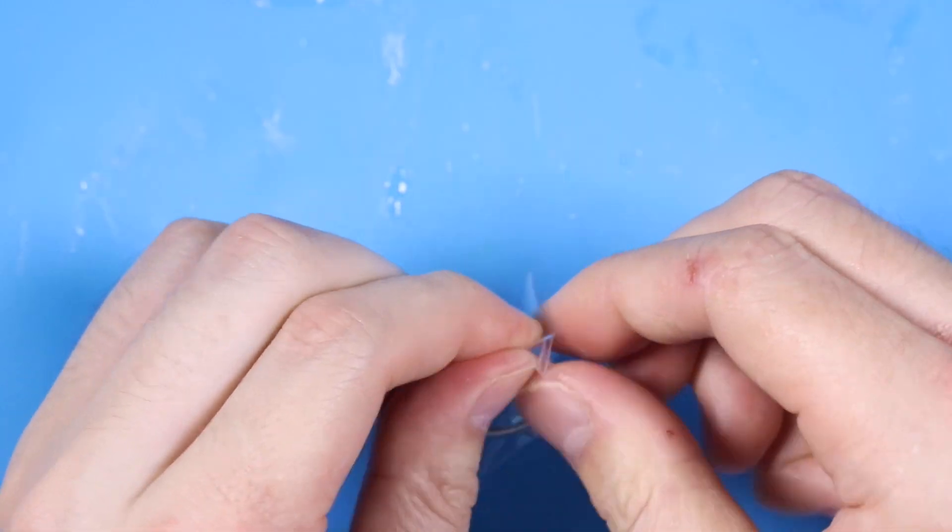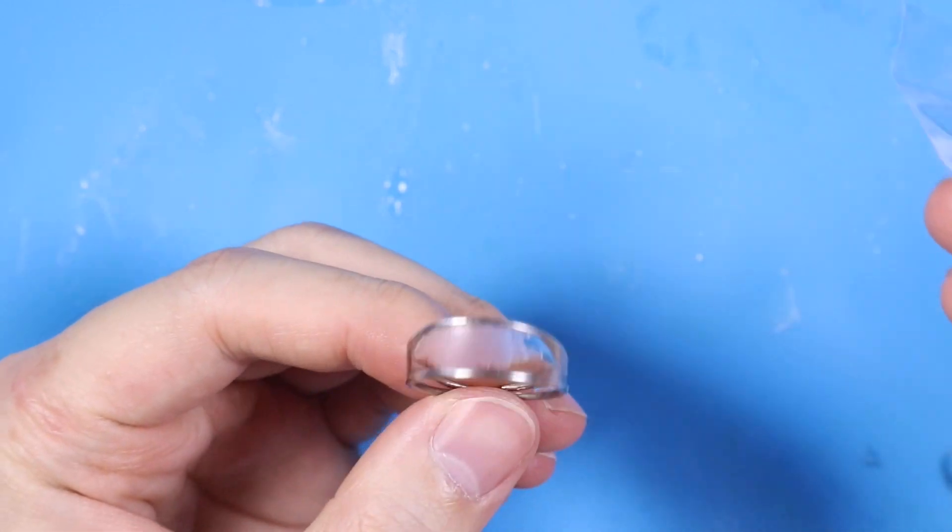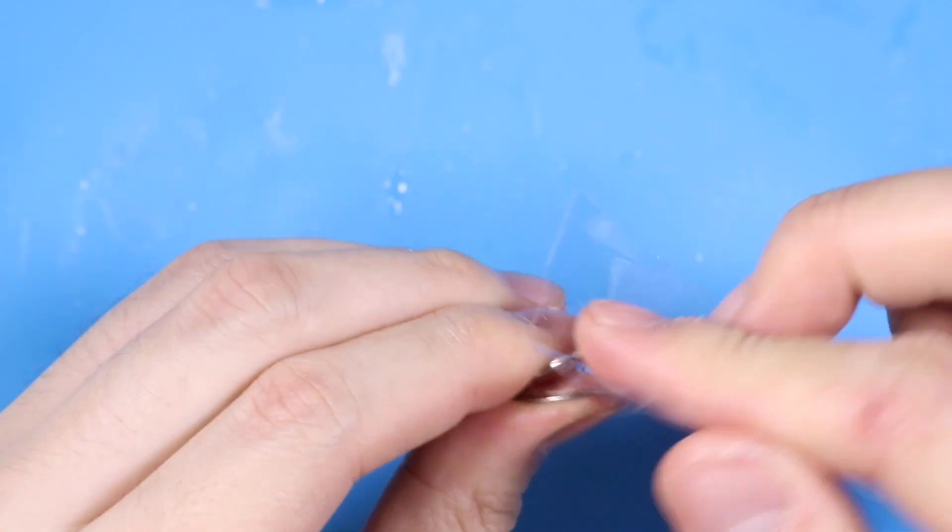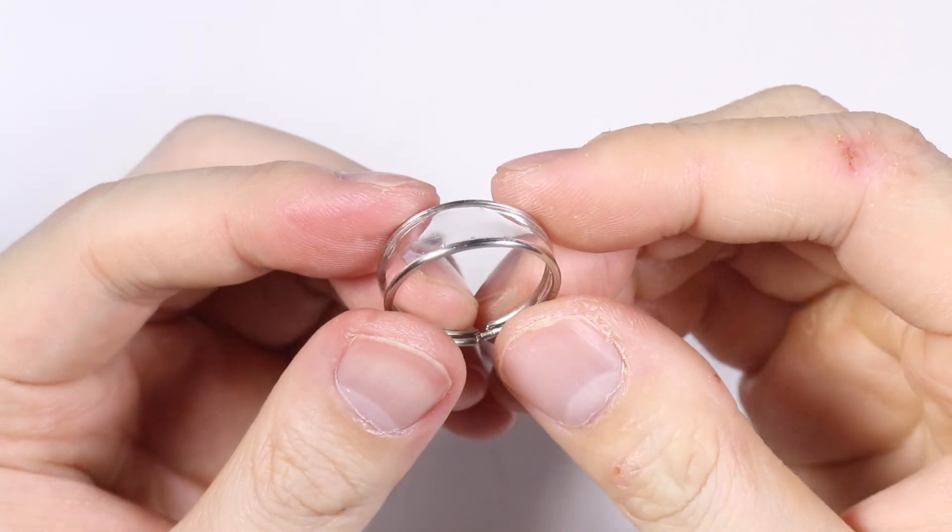Once the UV resin has set, I am taking off the tape layer. And sometimes with the tape it leaves the adhesive on it. So the easy way to take it off is to place some tape and just kind of snap it off. And it comes really clean like this.